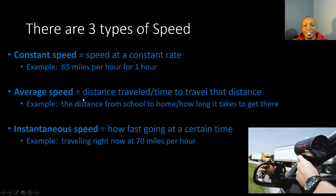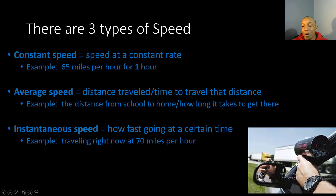Average speed is the distance traveled over the total time to travel that distance — for example, the distance from school to home over how long it takes to get there. Instantaneous speed is how fast something is going at a certain moment in time — for example, traveling right now at 70 miles per hour. This picture shows a police officer holding a radar gun, which is designed to calculate a person's speed at a certain point in time.